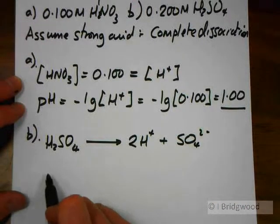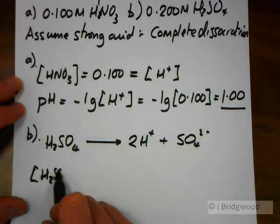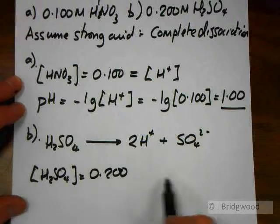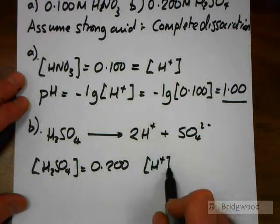Now this means that whereas the concentration of the H2SO4 is equal to 0.200, the concentration of hydrogen ions is twice that.